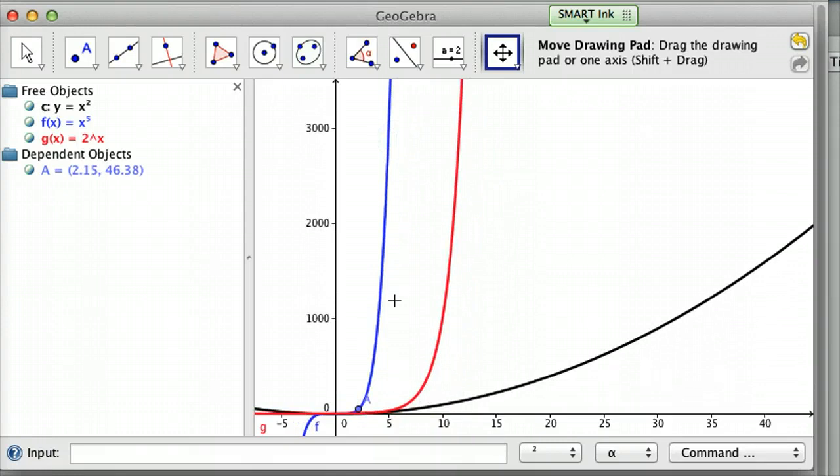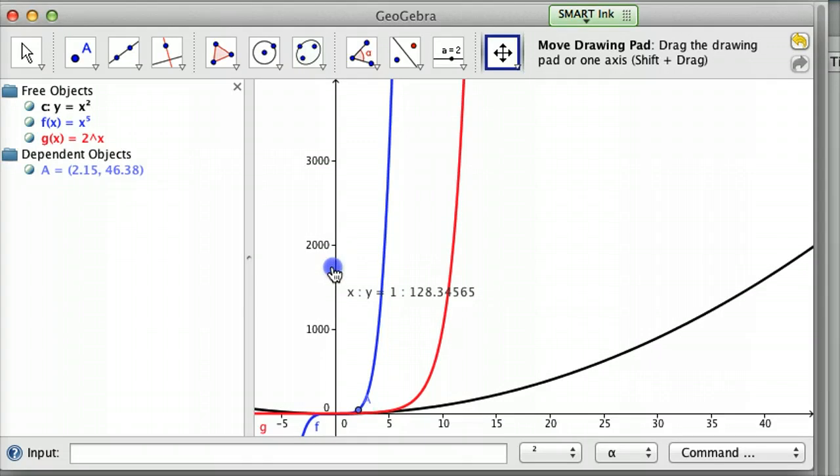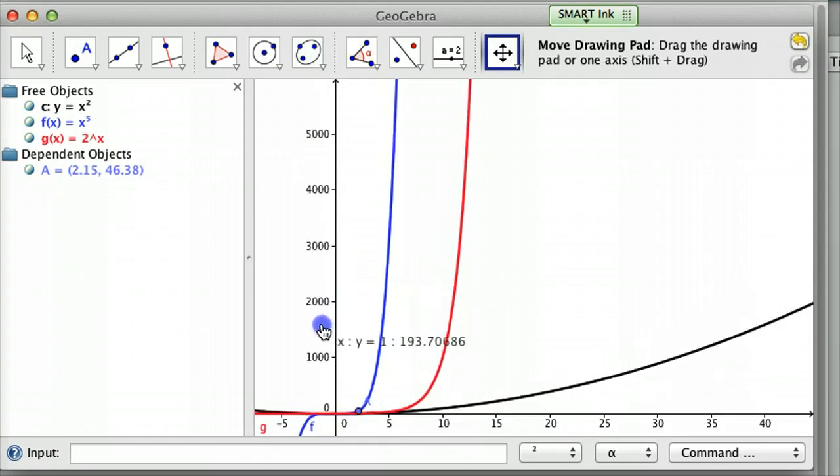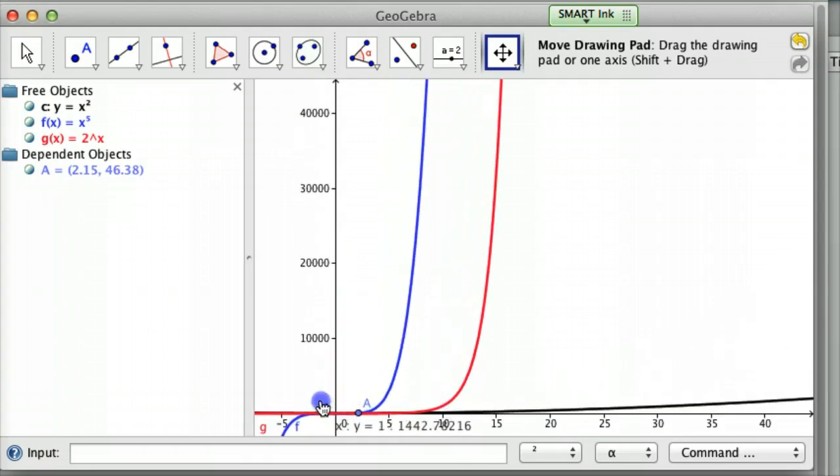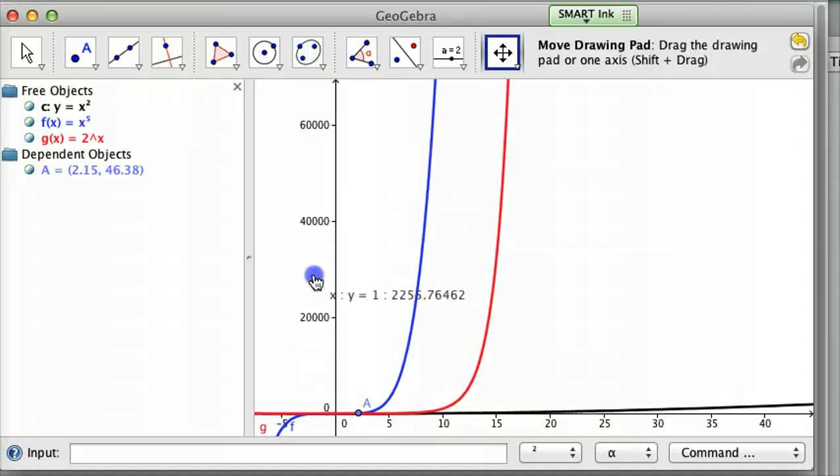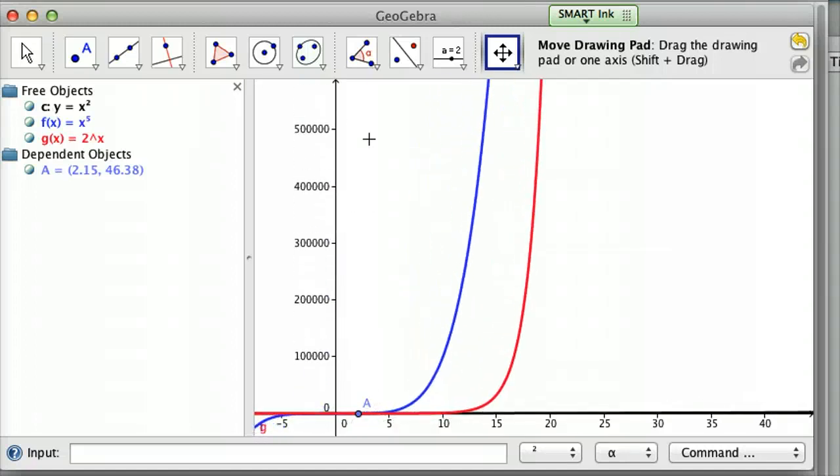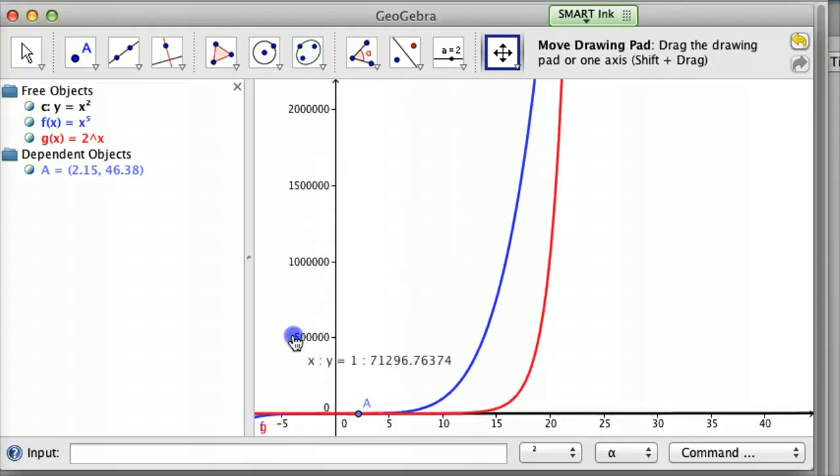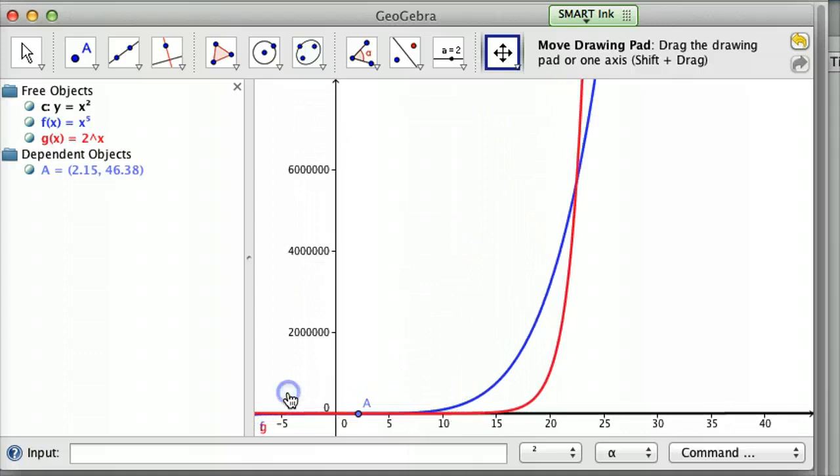But you notice my red exponential getting closer and closer to that polynomial, that polynomial X to the 5th. So as I change this Y scale, I mean, I'm in the 20,000s there. But you can see right where it overtakes it here at a little bit before 20 and up past 500,000.